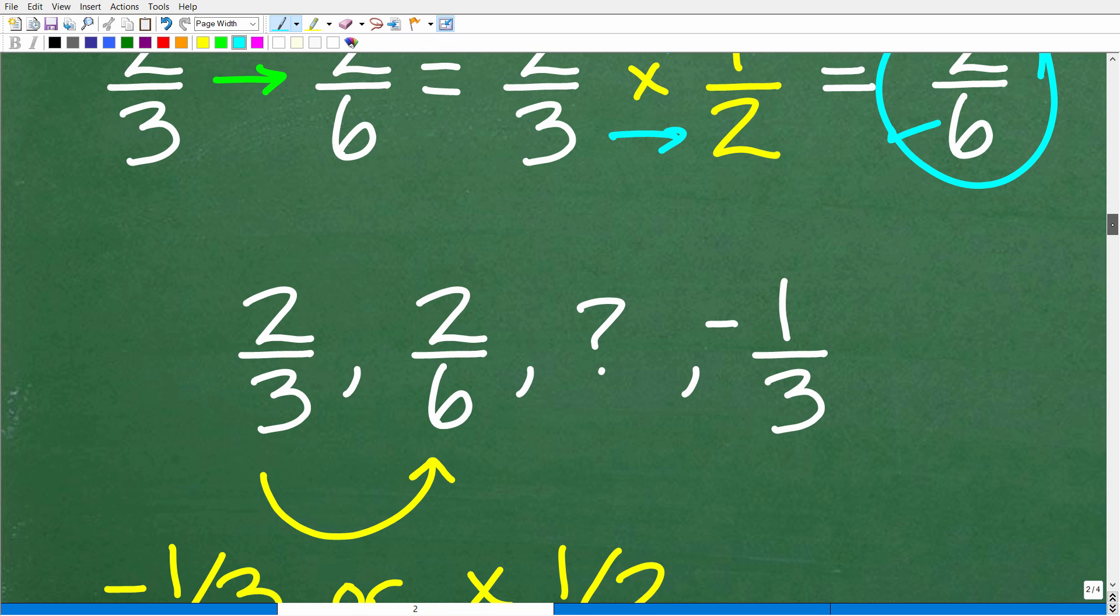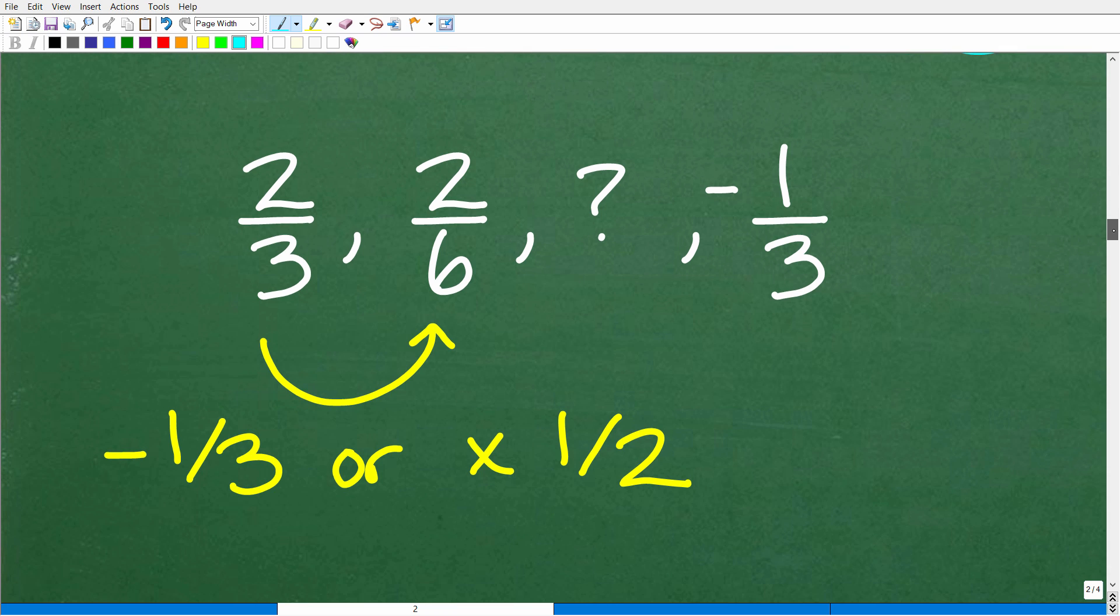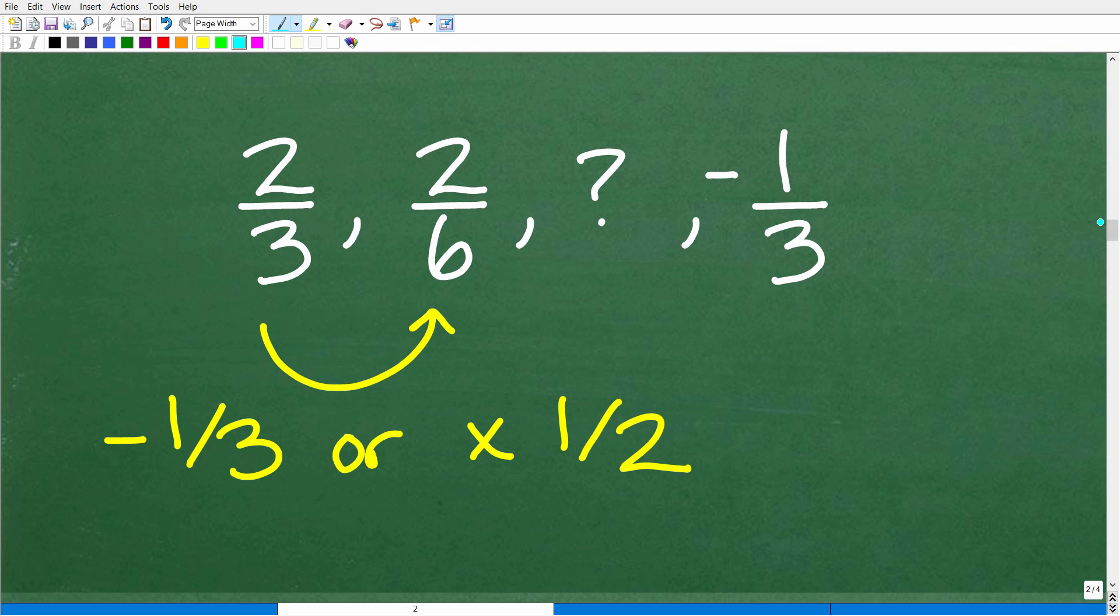All right, so which one of these rules is correct? Well, we don't know. We're going to have to do some testing, and that's why this problem should not be too difficult if you understand fractions and you're willing to kind of stick with the problem long enough. All right, so two-thirds to two-sixths, is it negative one-third or one-half? Well, we have to kind of test each one of these rules, but we have to get this value and then test these rules again to see if we can get to a negative one-third. So that is the strategy. So let's go ahead and get started.